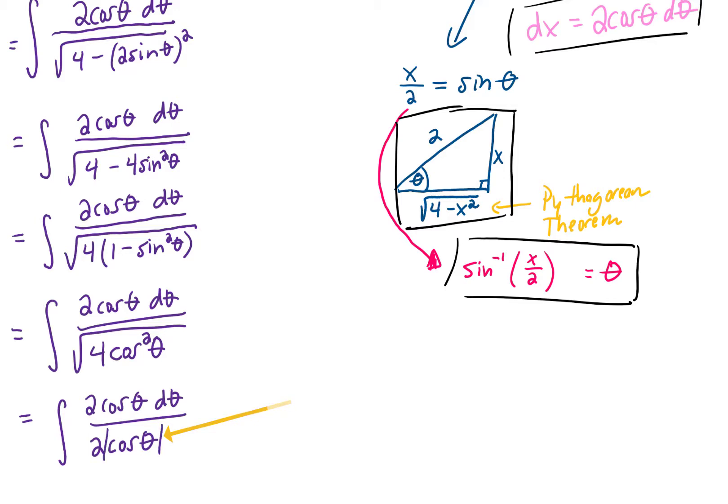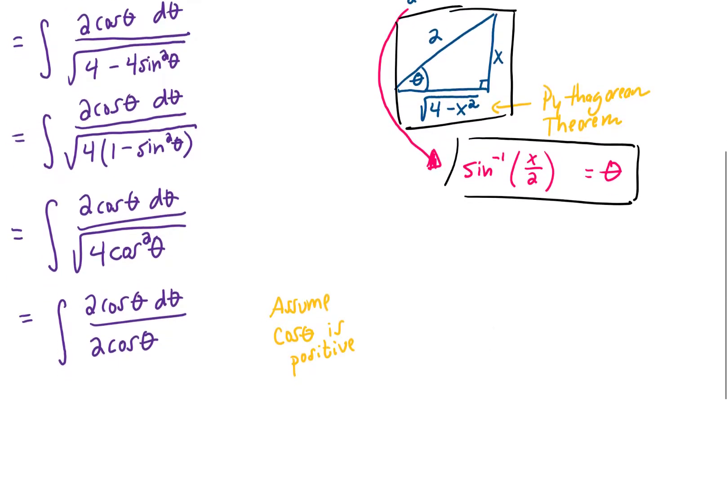Well, technically we get the absolute value of cosine. Later on in this section, we might have to investigate where is the cosine of theta positive and where is it negative. We might have to do some things with this absolute value of cosine. But right now, this is an indefinite integral. And we want to continue on with this problem. So we're just going to assume that the cosine of theta is already positive. We're going to get rid of those absolute values.